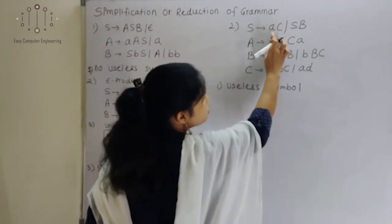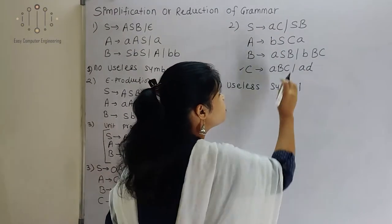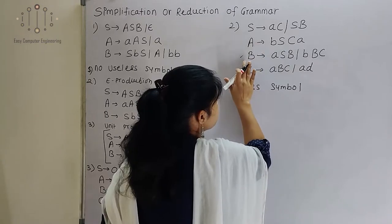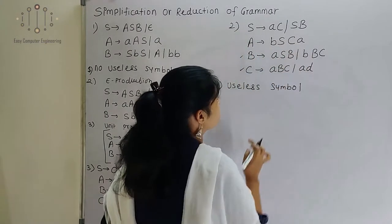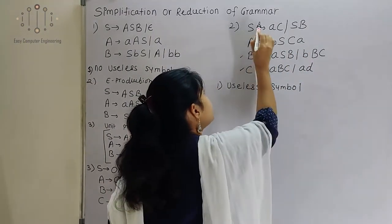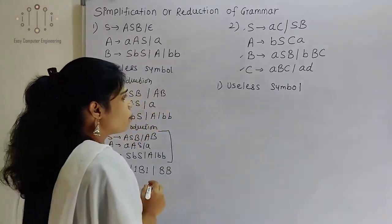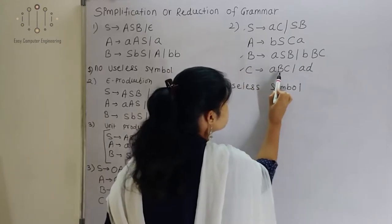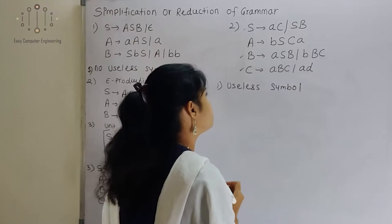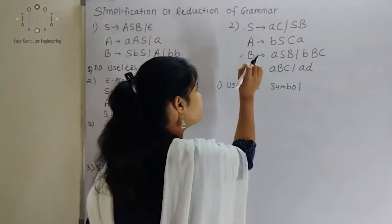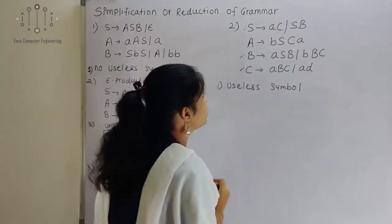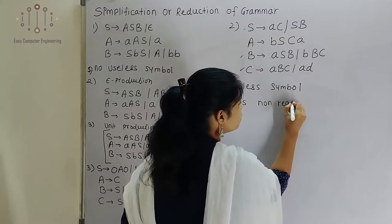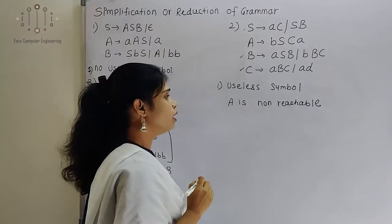From S, I can reach to AC. Using this, I can reach to C. From production SB, S is itself and B, so I can reach B as well. From A: B, S, C, A — so from A I can reach S as well as C. From B I can reach S and B. From C I can reach B and C. And AD is a terminal. That means there is no production to reach A symbol, so A is a non-reachable symbol. We will remove A from our grammar.